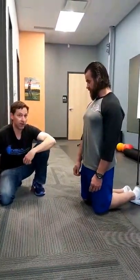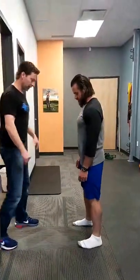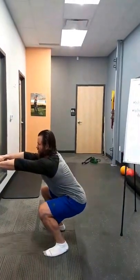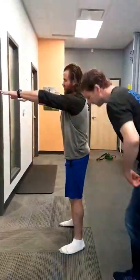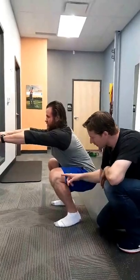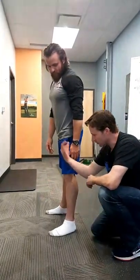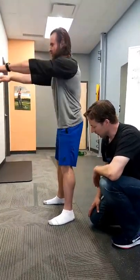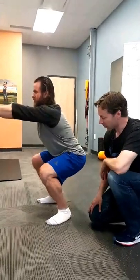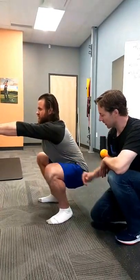Now let's do a squat test. Feet shoulder-width apart, arms straight out in front, go down to a full squat as far as you can while keeping your heels on the floor. We're looking for ankle dorsiflexion. He has pretty good dorsiflexion here, though comparing to the wall test he was getting more translation of the knee forward. Another thing to look for: is his torso parallel with his shins? He's doing a really good job of that.